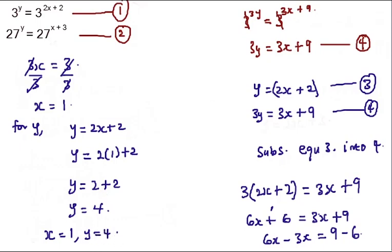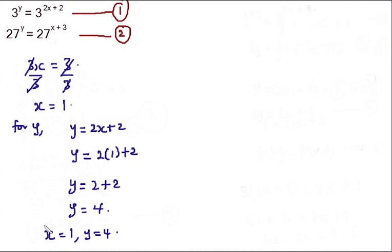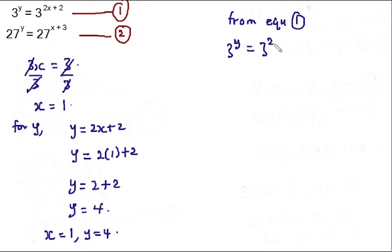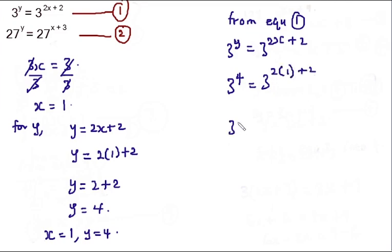We can verify the answers by substituting back into equation one: 3^y = 3^(2x+2). With y = 4 and x = 1: 3^4 = 3^(2×1+2) = 3^4. Since 3^4 = 3^4, the answers are confirmed correct.